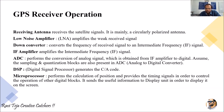Next comes the microprocessor, which performs the calculation of the position and also provides timing signals to control the operation of the digital blocks. The microprocessor handles inputs, outputs, and timing signals across all digital blocks. It sends the useful information to the display unit, where we can see the map output and other location details.